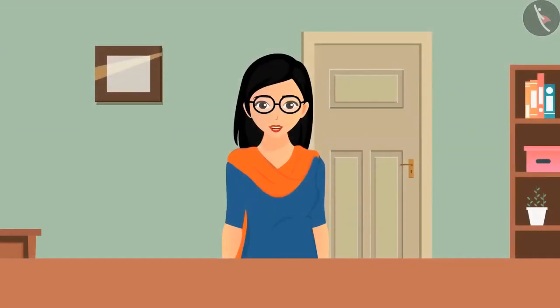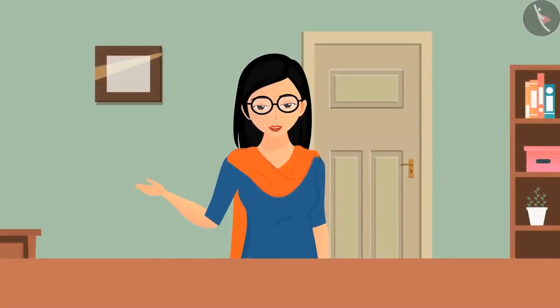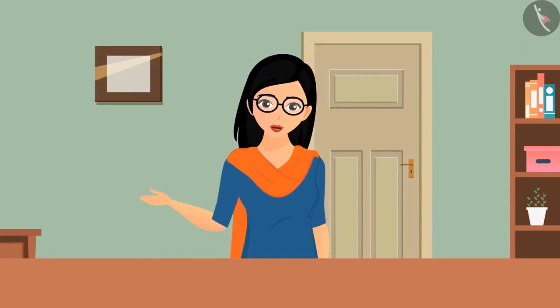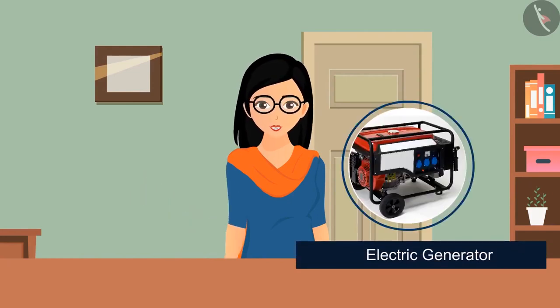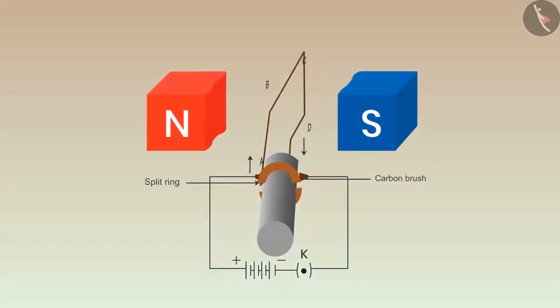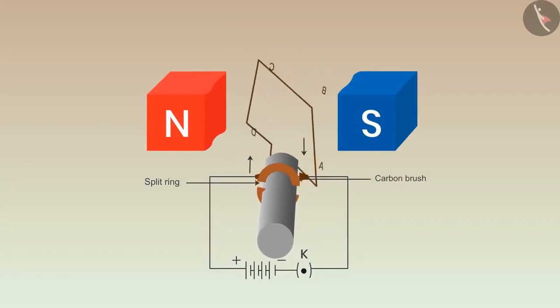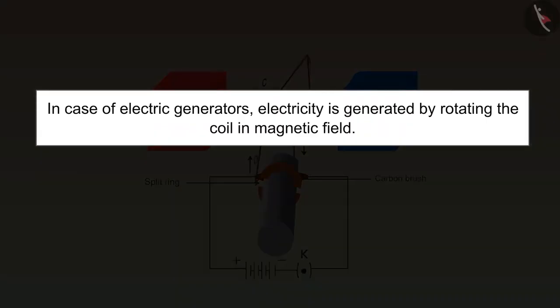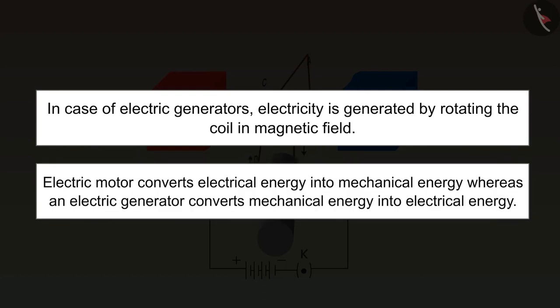There are two types of devices: those that consume electricity and those that generate it. A device which converts mechanical energy into electrical energy is known as an electric generator. In the case of electric motors, the coil rotates when electric current is passed through it in a magnetic field; whereas in the case of electric generators, electricity is generated by rotating the coil in the magnetic field. An electric motor converts electrical energy into mechanical energy, whereas an electric generator converts mechanical energy into electrical energy.